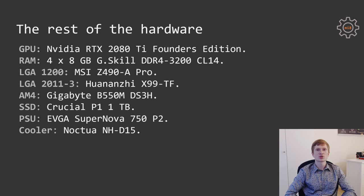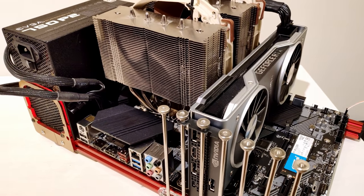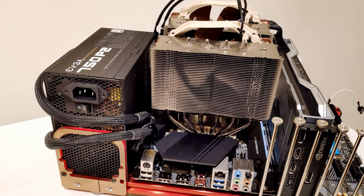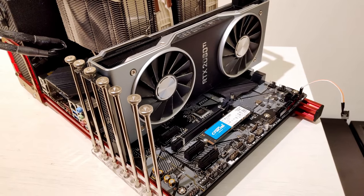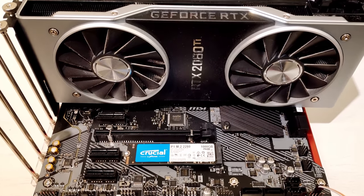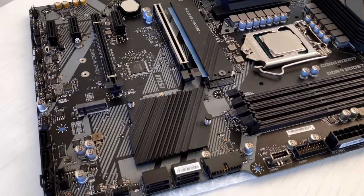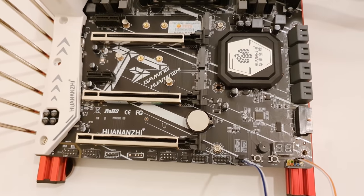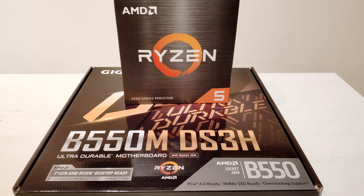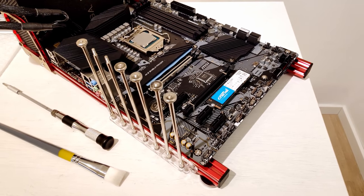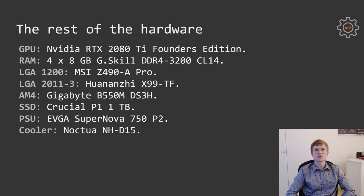The GPU used is an NVIDIA RTX 2080 Ti Founders Edition — RTX 3080 is too expensive and out of stock. All 5 CPUs were tested with the same 4×8 GB G.Skill DDR4-3200 CL14 memory. LGA 1200 CPUs used an MSI Z490A Pro, LGA 2011v3 CPUs used the Huananzhi X99 TF, and the Ryzen 5 5600X used a Gigabyte B550M DS3H. Storage was a Crucial P1 1TB SSD. All platforms were tested with fresh Windows installations.